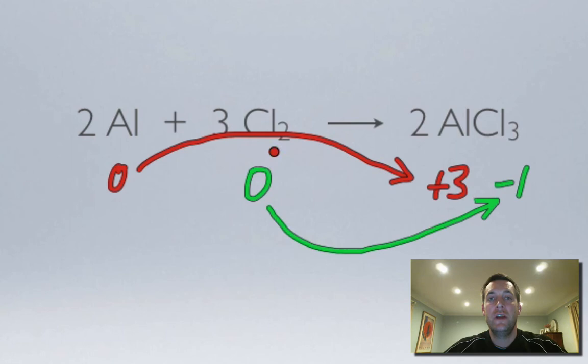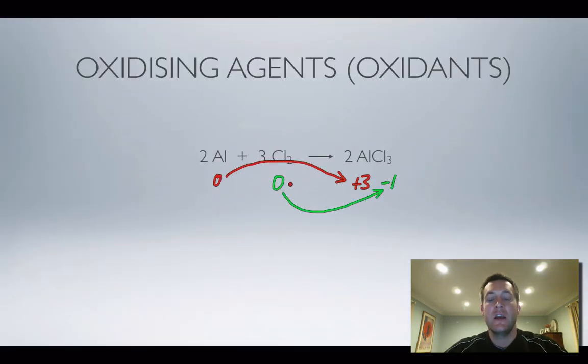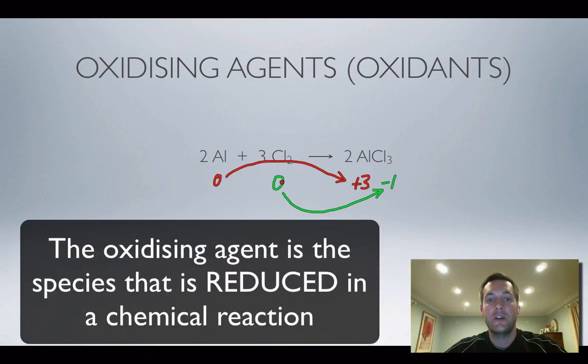It was the chlorine what done it. The chlorine oxidised the aluminium. So the chlorine was the oxidising agent, the one that did the oxidising. And again, the oxidising agent here is the one that is reduced.